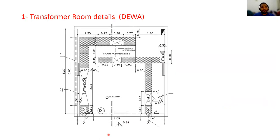Question one: transformer room details as per DEWA regulations. This is how they ask about the transformer base — how to draw the transformer base. The dimensions are 0.77, 0.9, 0.77, 0.92, 0.60, and 0.92. Also, they will ask where you are installing the RMU and how the trenches are arranged. Just go through this slide and you will learn all these details.